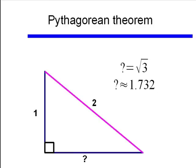It's an exact answer, but if we wanted to approximate and round to the nearest three decimal places, we would get an approximate answer of 1.732.